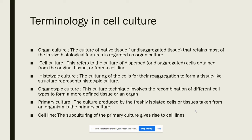The terminology in cell culture: tissue culture is used to include both organ culture and cell culture. Organ culture is the culture of native, undisaggregated tissue, while cell culture is the culture of dispersed or disaggregated cells. Histotypic culture is culturing of cells so that re-aggregation takes place and a tissue-like structure forms. Organotypic culture involves recombination of different cell types to form a more defined organ or tissue. Primary culture is produced from freshly isolated cells or tissue taken from an organism. Cell line is formed by subculturing the primary culture.